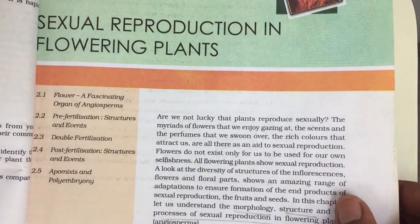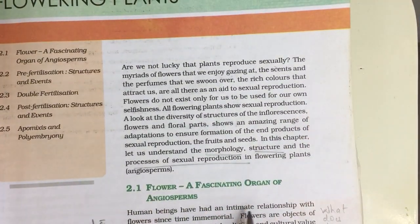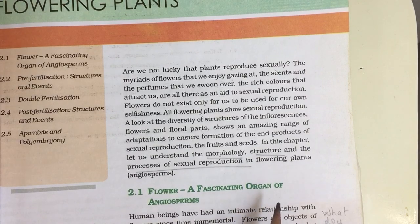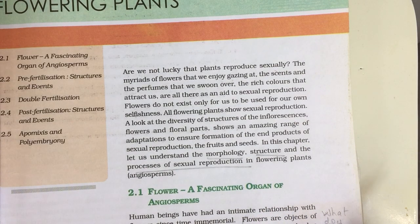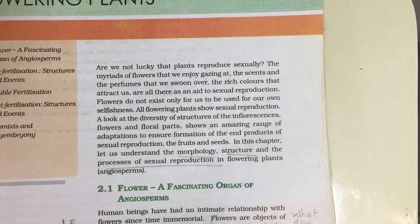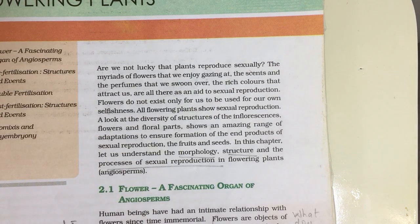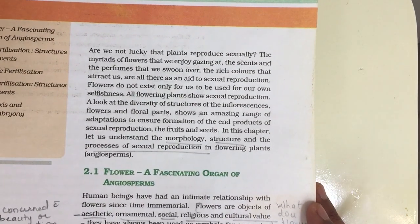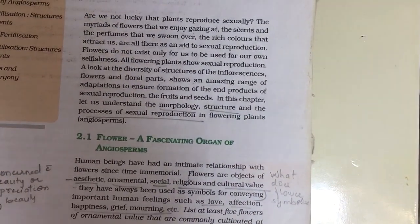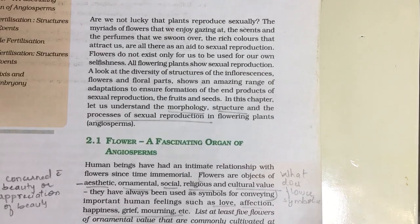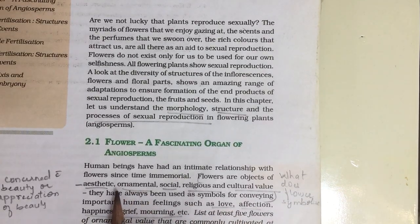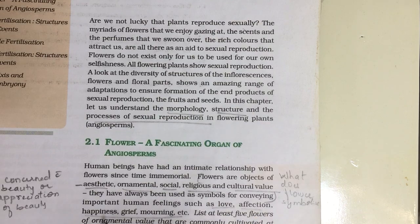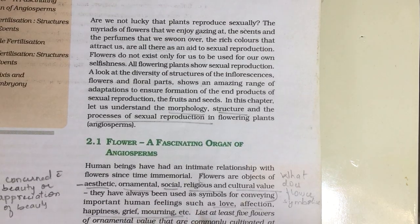The chapter introduces flowers as a fascinating organ of angiosperms. This introductory information is general and may not be directly exam-focused. However, a possible question is: what does the flower symbolize? The answer is that flowers have aesthetic, ornamental, social, religious, and cultural value, and are used for important human feelings such as love, affection, happiness, grief, and mourning.